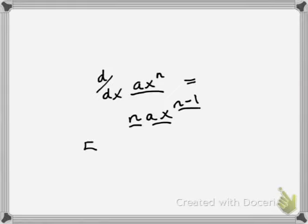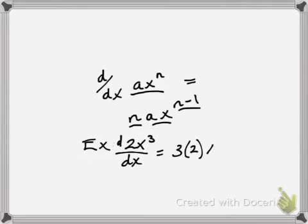For example, 2x to the 3, the derivative of this with respect to x is equal to 3 times 2x raised to the 2, or 6x squared. So that's the derivative of 2x to the 3.